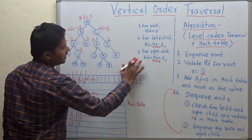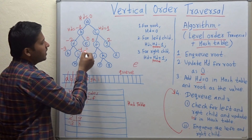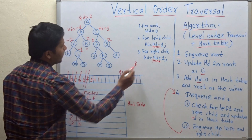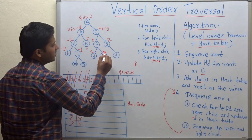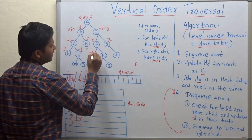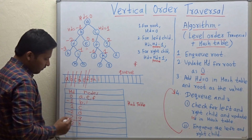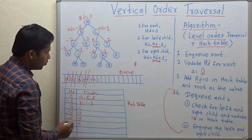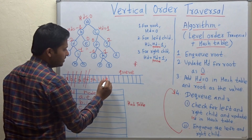Dequeue e — it has no left or right child, so nothing to do. Dequeue f — its left child is j with hd 0 minus 1 = minus 1, and right child is k with hd 0 plus 1 = 1. Add j to key minus 1 and k to key 1 in the hash table. Then enqueue j and k.